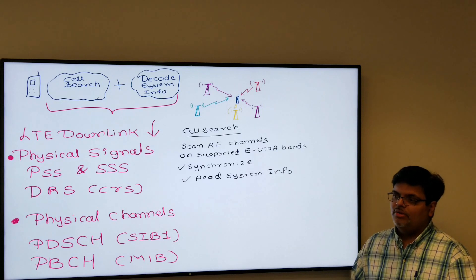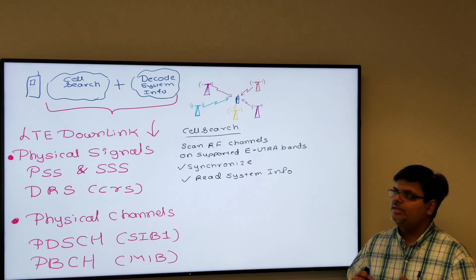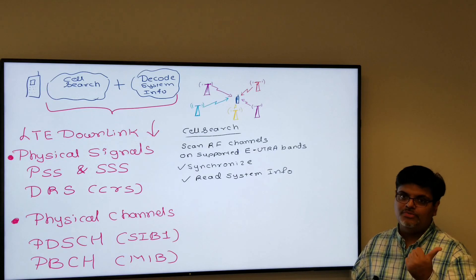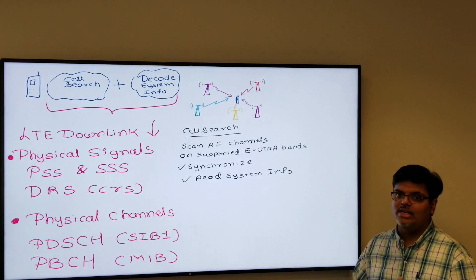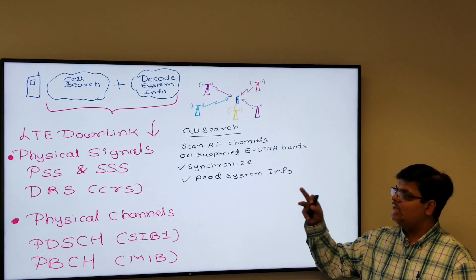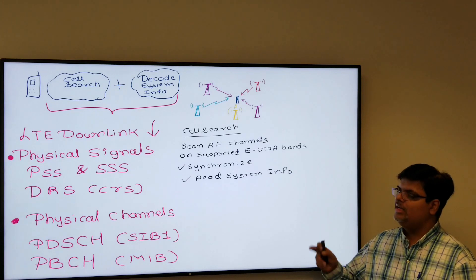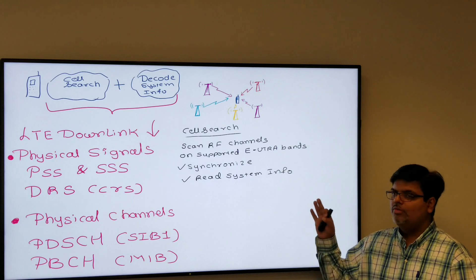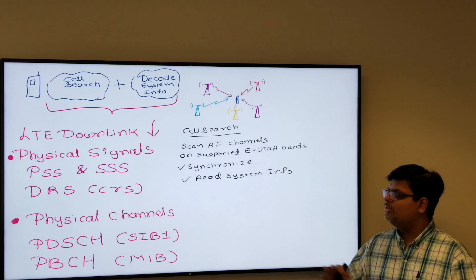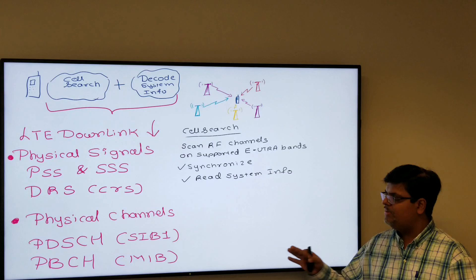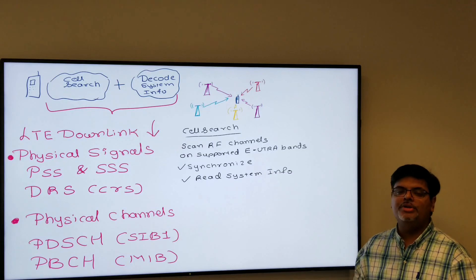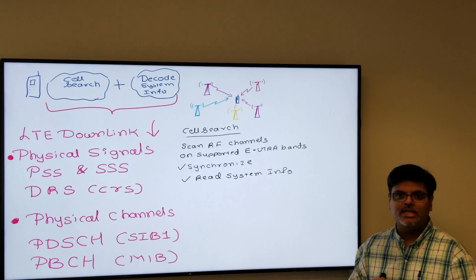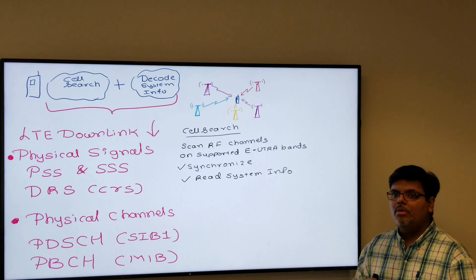In LTE there are two types of downlink transmissions on physical channel: one is physical signals, other is physical channels. The signals are basically PSS, SSS, and DRS. There are a lot of physical channels; for this particular procedure we are interested in only two channels which is PDSCH and PBCH. We have a separate video on radio frames and physical channels if you are interested.